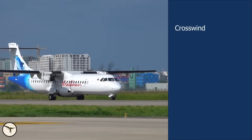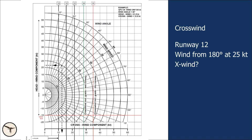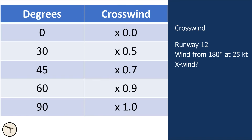Rule 7: If you're departing from or landing on runway 12 and the wind is reported at 180 degrees at 25 knots, what is the crosswind component? There's a handy mental shortcut based on the angle between wind direction and runway heading: 0° difference = 0% crosswind; 30° off = 50%; 45° off = 70%; 60° off = 90%; 90° off = 100% crosswind. In this example, runway 12 is aligned to 120 degrees and wind is from 180 degrees — a 60-degree difference. 25 knots × 0.9 gives approximately 23 knots crosswind component.